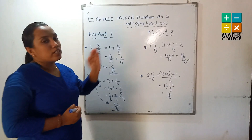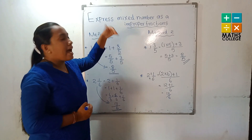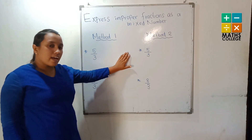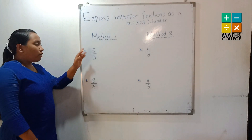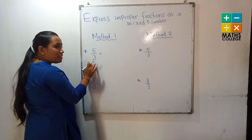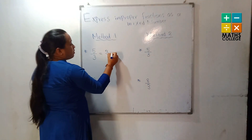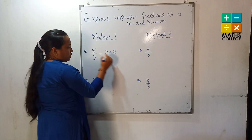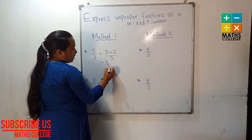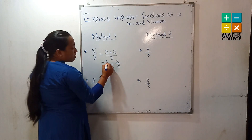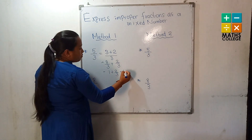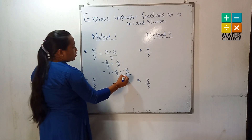These are the two methods for converting a mixed number as an improper fraction. Now, how to convert an improper fraction as a mixed number — two methods also. Five upon three is the improper fraction. How many threes are in five? One three is in here, which gives three, then two remains. We split five upon three into three upon three plus two upon three. Three upon three is one, so the answer is one and two upon three — converted to a mixed number.